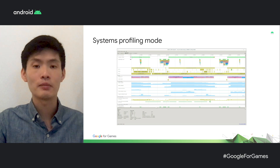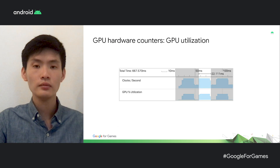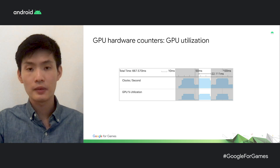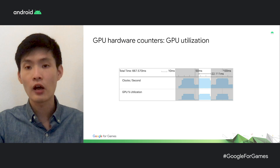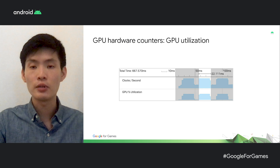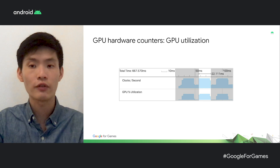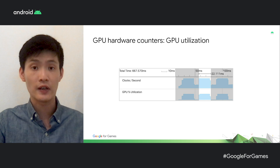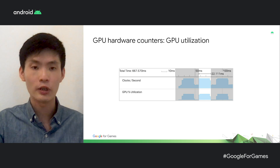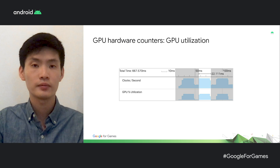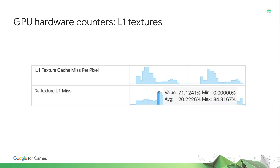I'll now show you a few real-world examples that we've encountered. This is an example of a real Android game. In this screenshot, as part of the trace we took, we see both clocks per second and GPU utilization. Looking at these hardware counters more carefully, we can see when the GPU is executing and clearly identify GPU frame times. Knowing the GPU frame time, we can quickly tell if the GPU workload needs to be optimized to hit our desired frame rate. Here, we can see that the frame time is about 22 milliseconds. If we want to hit 60 frames per second, we'll need to make some optimizations. We can also dive deeper to look at more complex GPU hardware counters to see where we can make those optimizations to hit 60 frames per second.